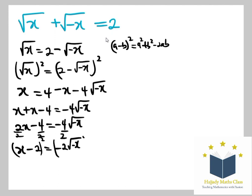So squaring both sides again, I'm doing the same thing I did here. So on the left hand side, I'm going to have x² - 4x + 4 = -4x.